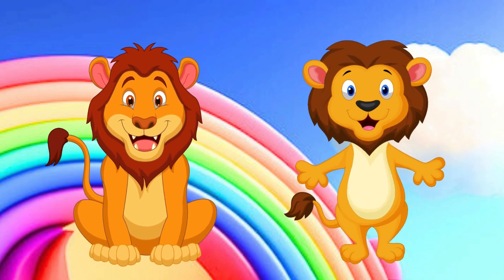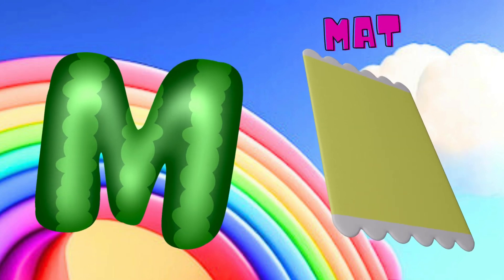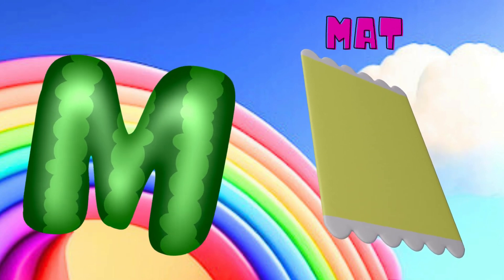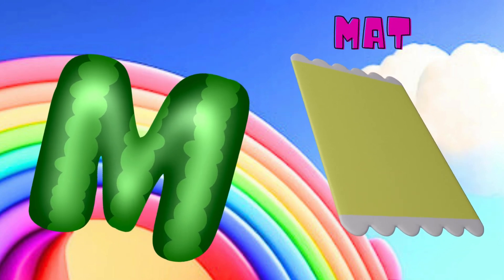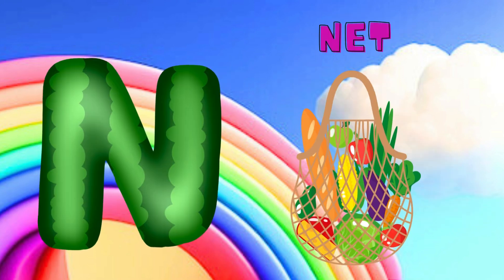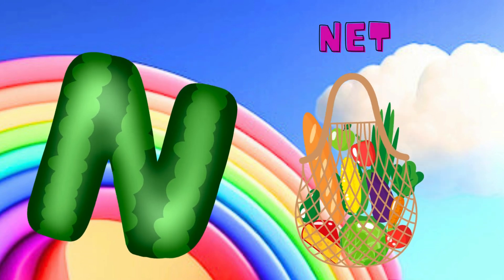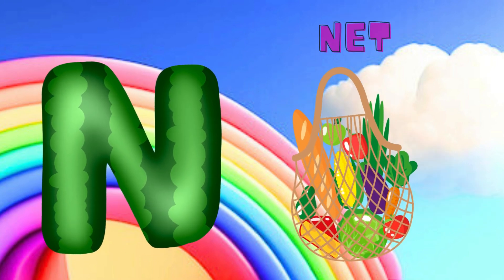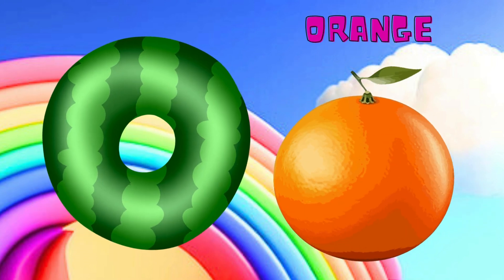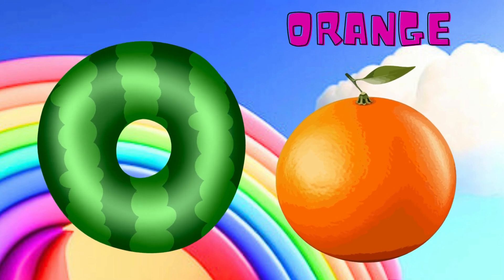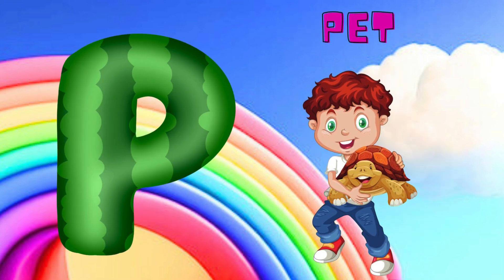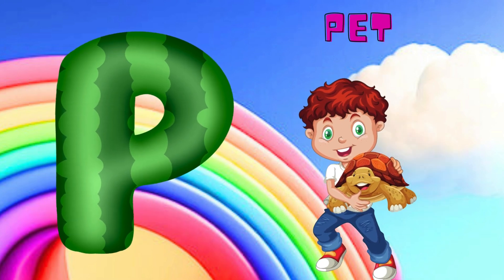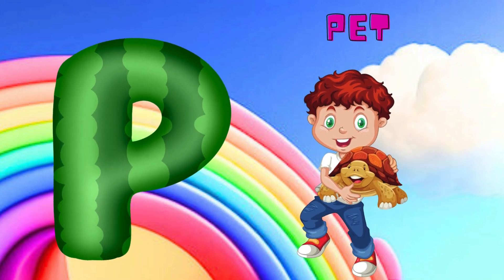M is for mat, m-m-mat. N is for net, n-n-net. O is for orange, o-o-orange. P is for pet, p-p-pet.